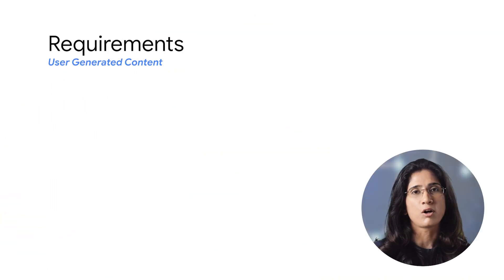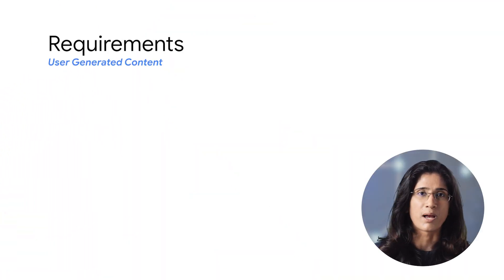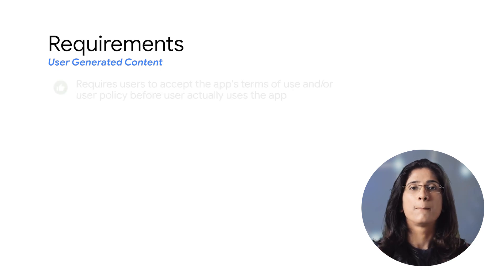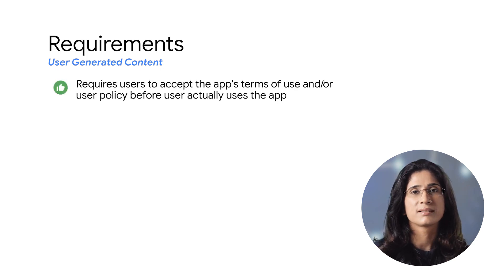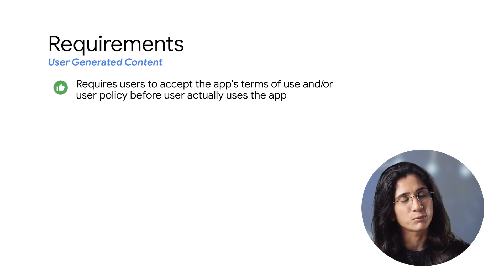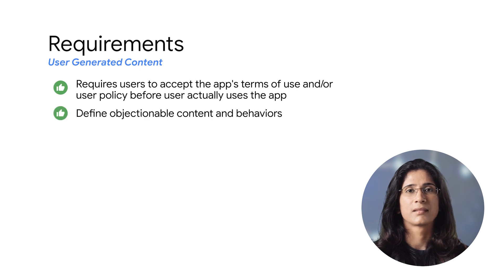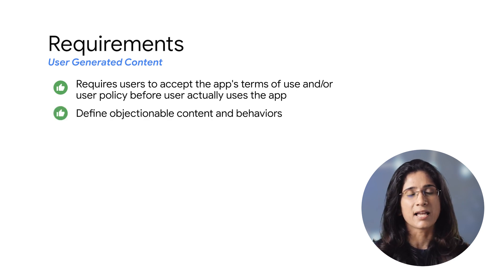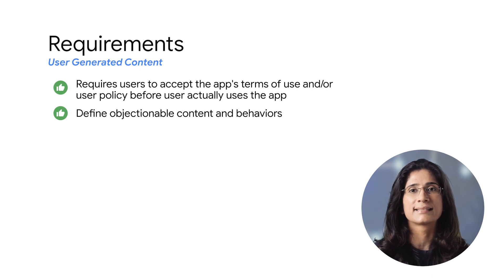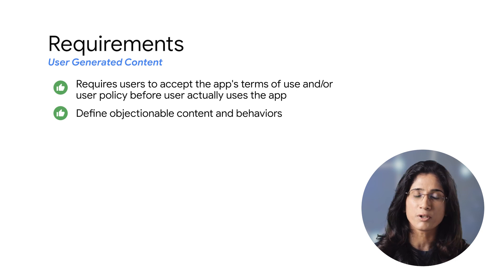Let's now go over our UGC policy requirements. Apps that contain or feature UGC must require that users accept the app's terms of use or user policy before users can create or upload UGC. The app should define objectionable content and behavior in a way that complies with Play's developer program policies and prohibit them in the app's terms of use or user policies.